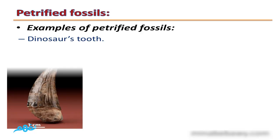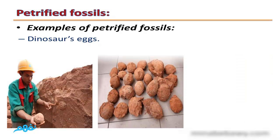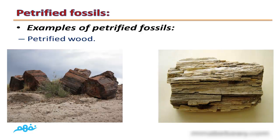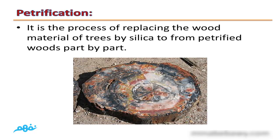Examples of petrified fossils — wood: these are fossils formed as a result of replacing the organic matter of wood by silica part by part, giving us details about the life of an old plant. Petrification is the process of replacing the wood material of trees by silica to form petrified woods, part by part.